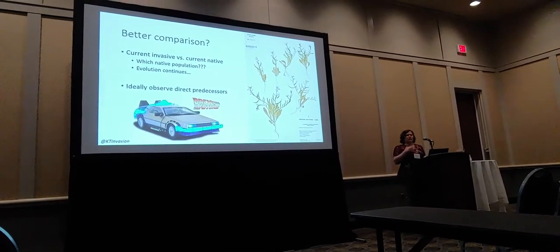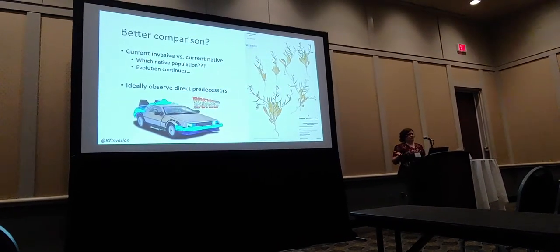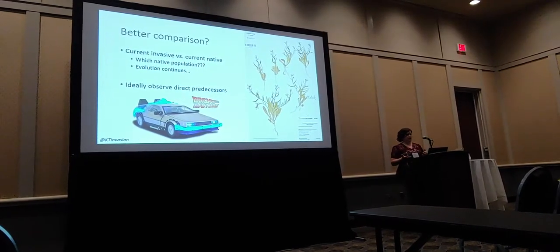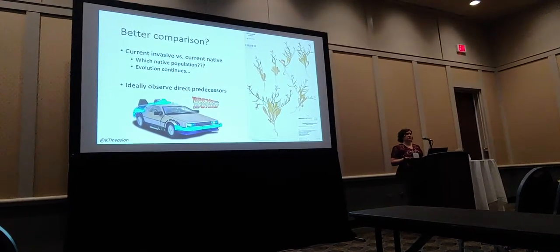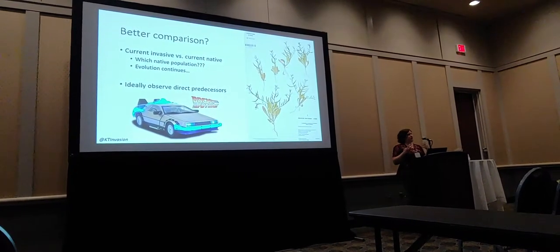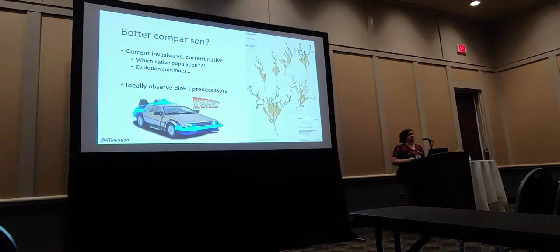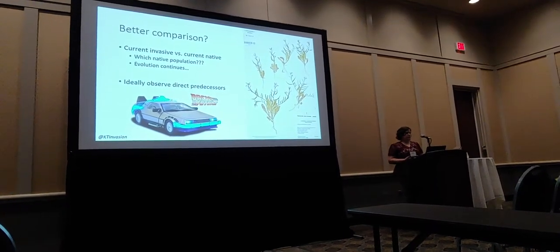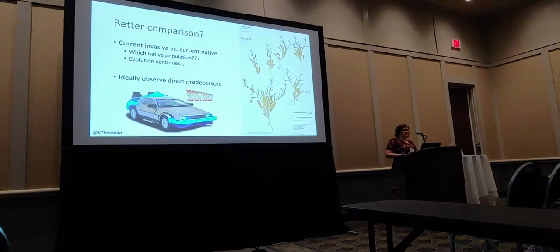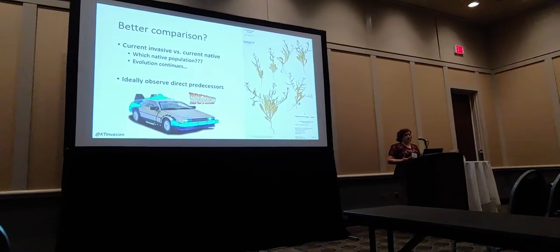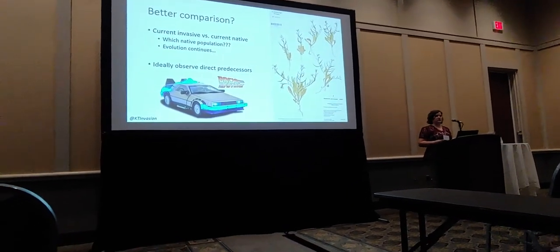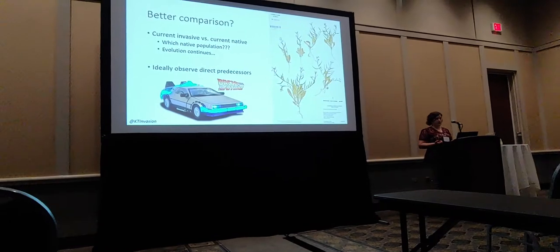Additionally, it's not like evolution just stops in the native range once a species gets introduced elsewhere. Climates are changing all over the world, so there's definitely evolution happening in the native range as well. So ideally, what we could do is observe the direct predecessors of contemporary invasive populations that we're interested in.